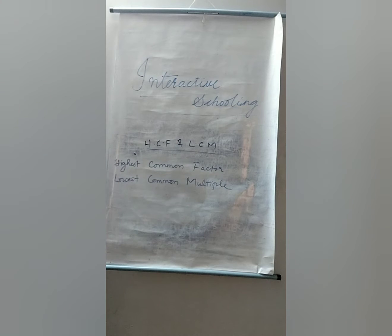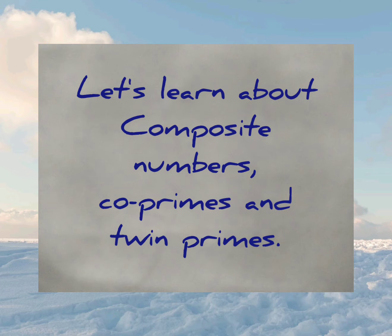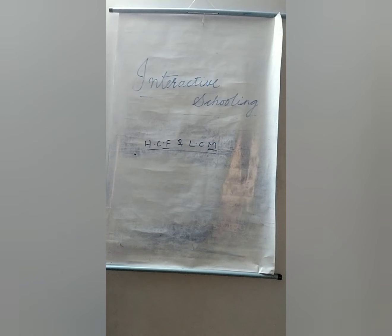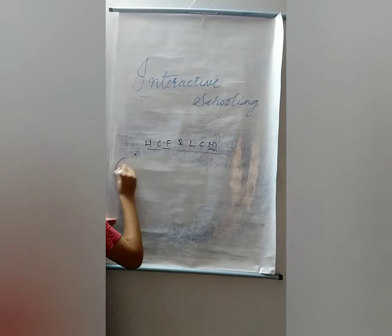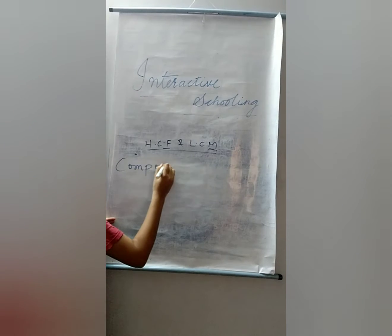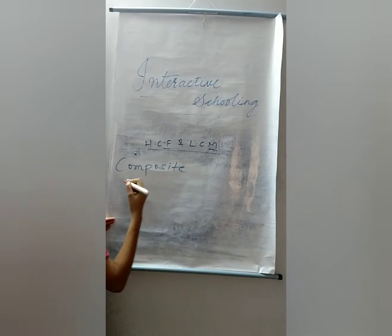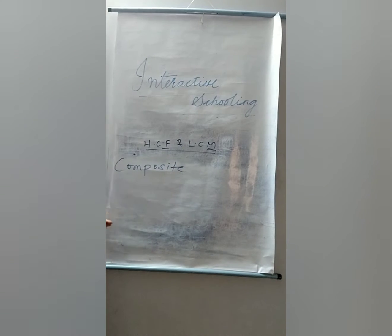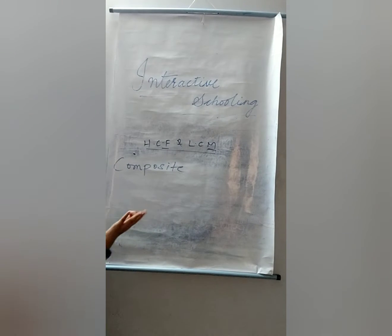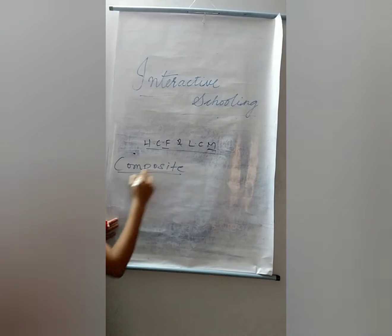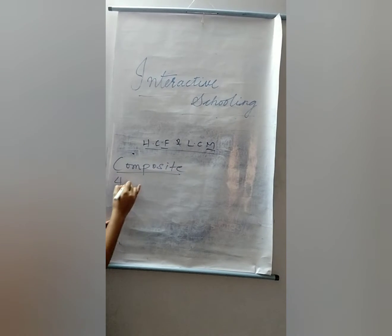Hi friends, welcome back to Interactive Schooling. Composite numbers are the ones which have at least one more factor other than one and itself.